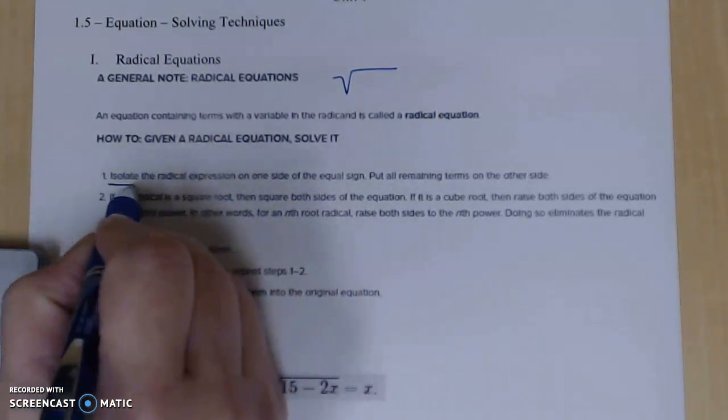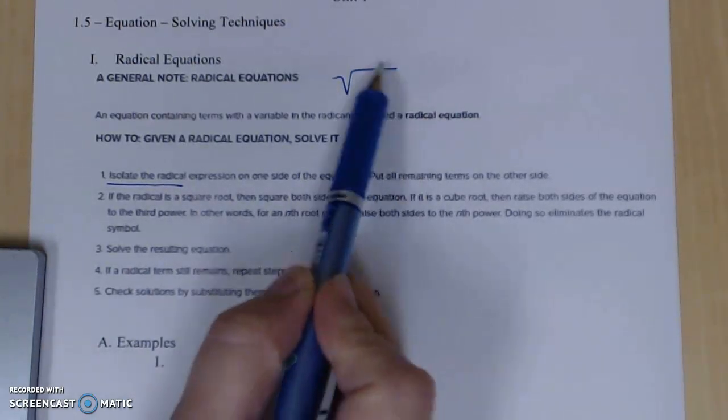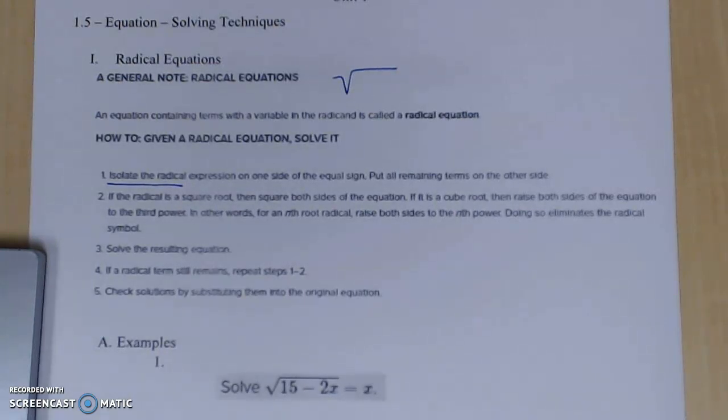The first thing that we have to do is we have to isolate the radical. It says actually isolate the radical expression on one side of the equal sign, put all remaining terms on the other side. So just like when you're solving for x, you always try to isolate x. In this case, we're going to isolate the radical or get the square root function completely by itself.